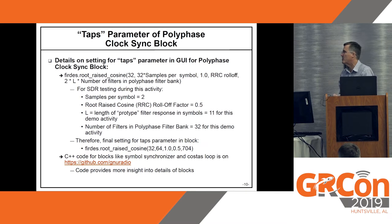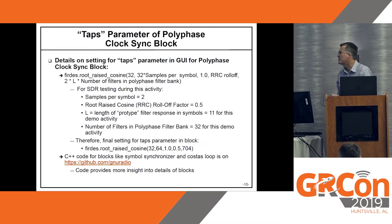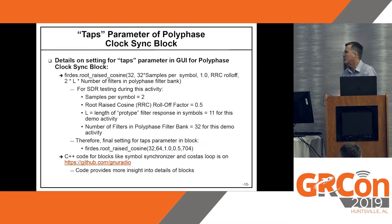For a new user, just put in 11 — or maybe 13 — and you'll be off and running. The number of filters in the polyphase filter bank: set that to 32, which is a good number. So all you need to type in is: FIR root-raised-cosine, 32, 64, 10, 0.5, and 704. That should get you going pretty quickly, especially if you're a new user.